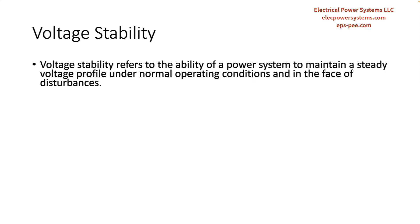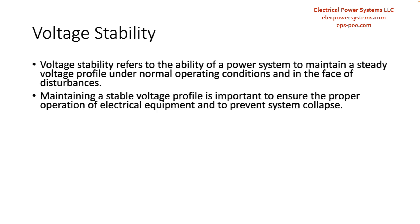Voltage stability refers to the ability of a power system to maintain a steady voltage profile under normal operating conditions and in the face of disturbances such as changes in load demand, faults, or equipment failures. In other words, voltage stability is the ability of a power system to maintain an acceptable voltage level at all points in the system, even under varying conditions.